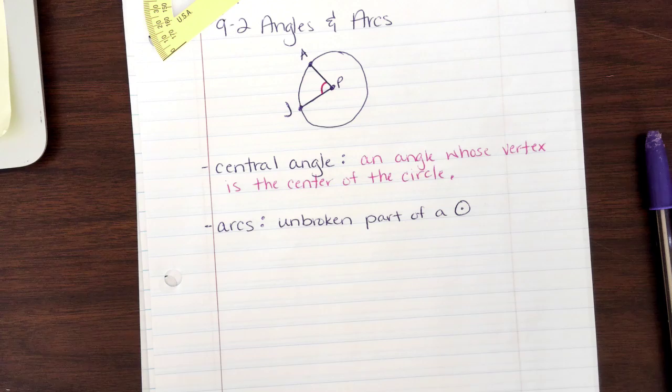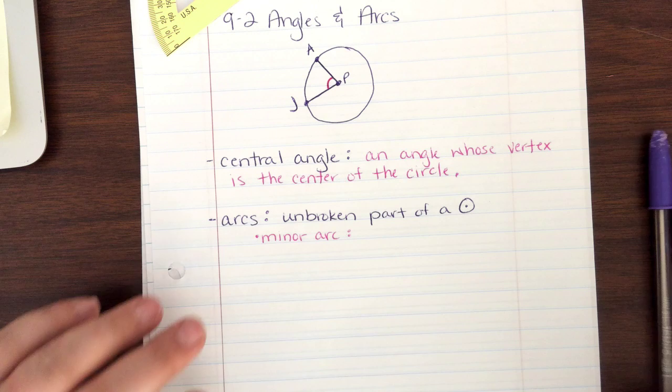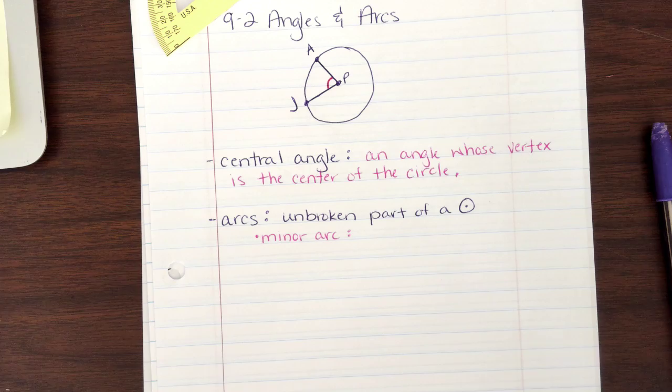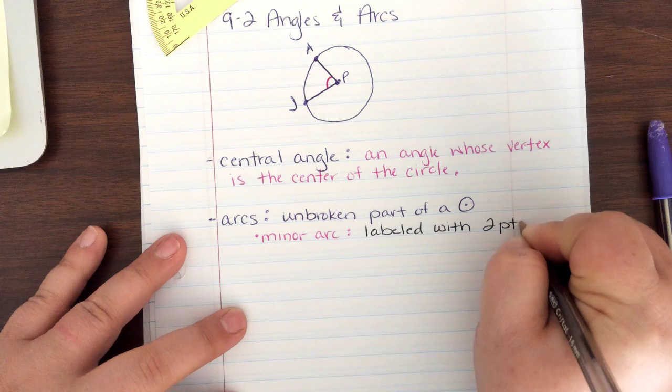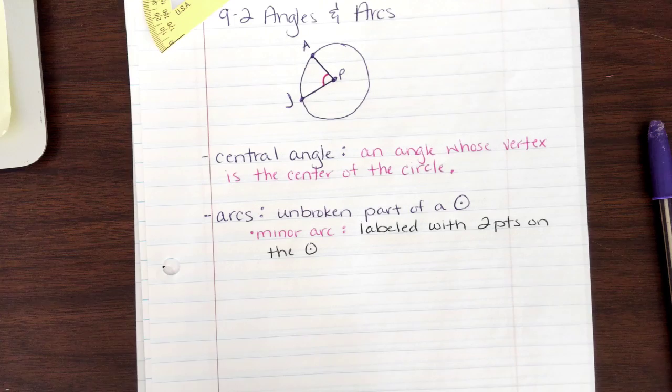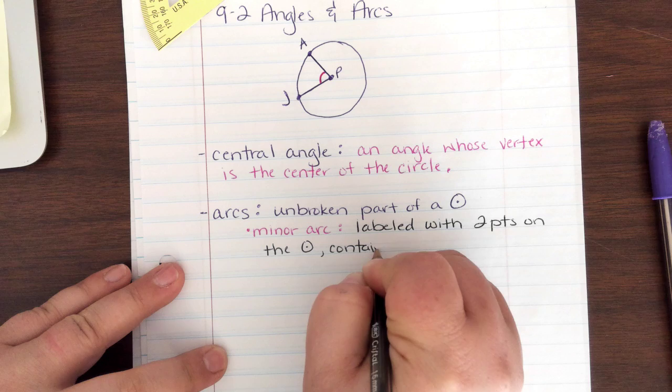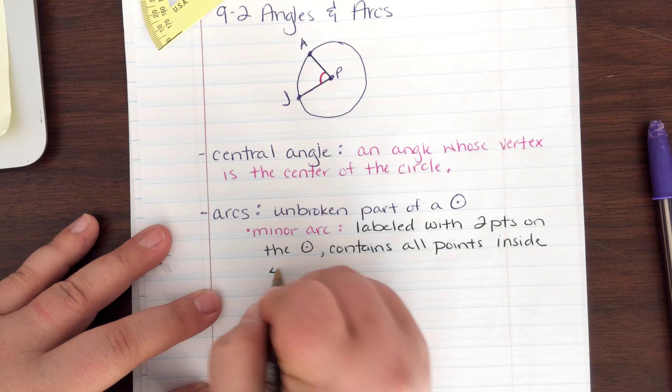Like I said, there are two types. First type is called a minor arc. M I N O R. Minor arc. The minor arc is labeled with two points. That is important. Labeled with two points on the circle. Labeled with two points on the circle.